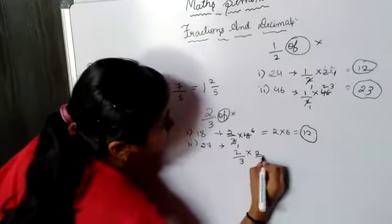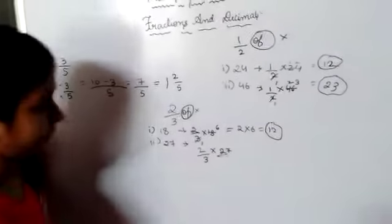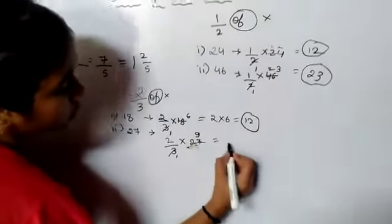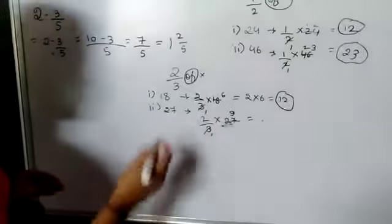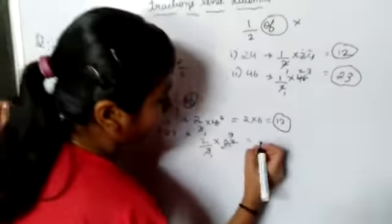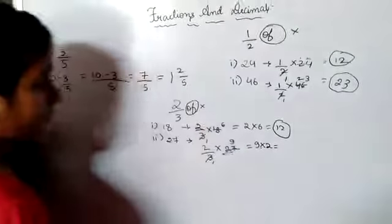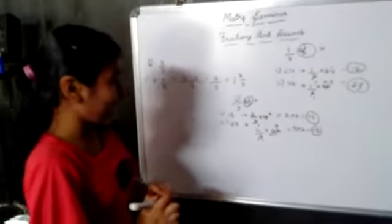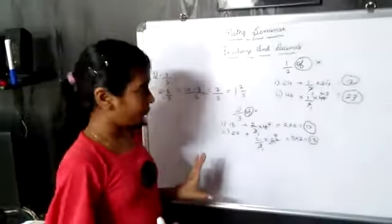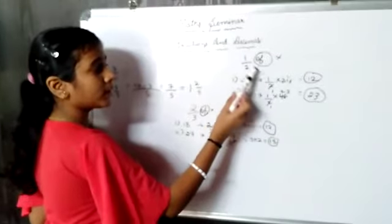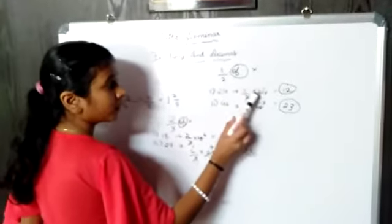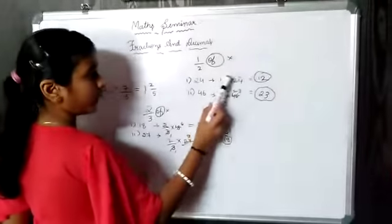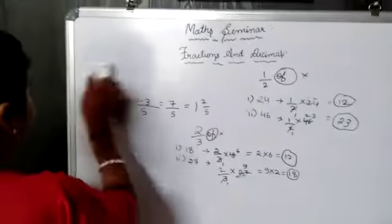Now for 2 upon 3 into 27: cancel 27 by 3. Three nines are 27, so 27 divided by 3 gives 9. The numerator is 2, so we multiply 9 into 2: nine twos are 18. The answer is 18. Let me explain once more: 1 upon 2 into 24 — we cancel 24 by 2 to get 12, then 1 into 12 equals 12. We got the answer.